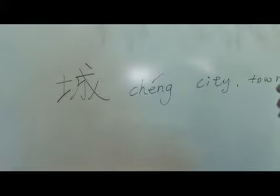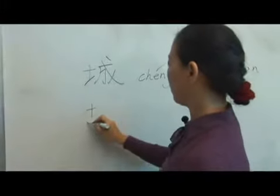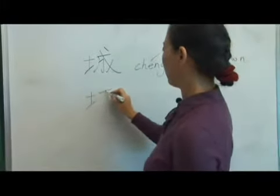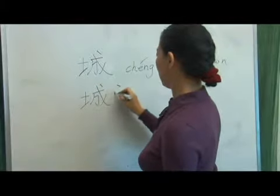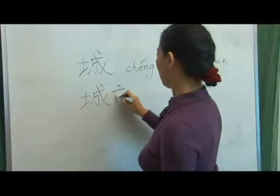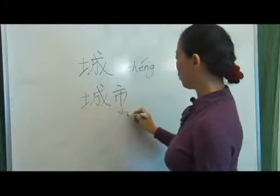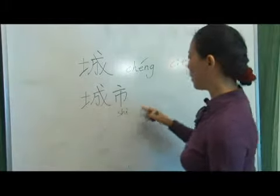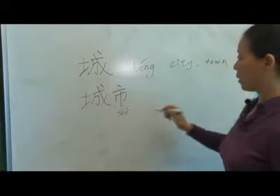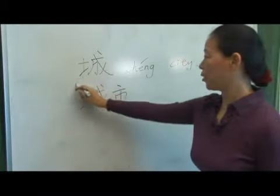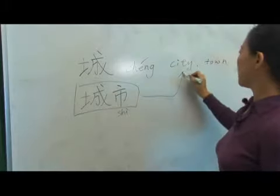We say 城市. This word 市 originally means market. So 城市 is one word that means city.